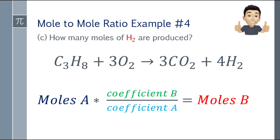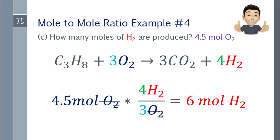For the last part — how many moles of H2 are produced — we again use 4.5 moles of oxygen gas as the given. That is 4.5 moles O2, multiplied by the coefficient of the wanted, which is 4H2.